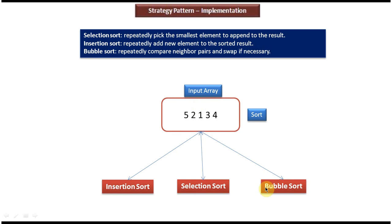Insertion sort algorithm is faster than selection sort algorithm, and selection sort algorithm is faster than bubble sort algorithm. As per strategy design pattern, for a particular task there will be multiple solutions and the client has to choose one solution at runtime to perform that task. So here, to perform sort there are multiple options, and from that I have to choose one algorithm to perform the sorting. This is the best example of strategy design pattern.